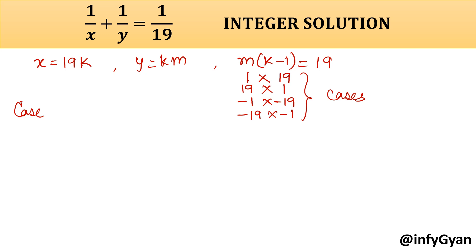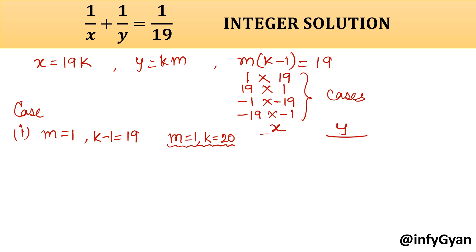Let me start with case 1. m is equal to 1, and k minus 1 is equal to 19, so m is equal to 1 and k is equal to 20. Now we can find x and y. x is 19k, so 19 times 20 equals 380. And y is km, so k is 20 and m is 1, giving y equals 20.